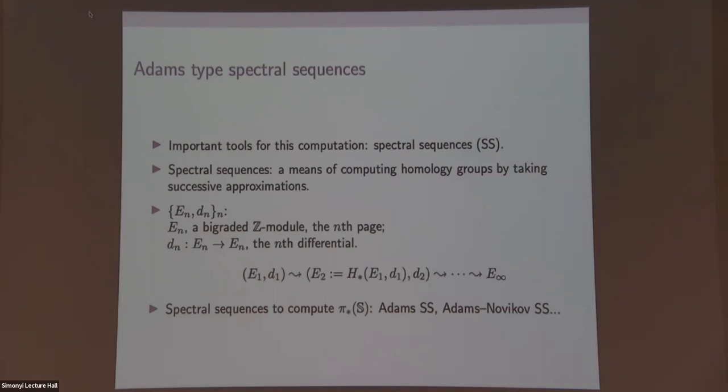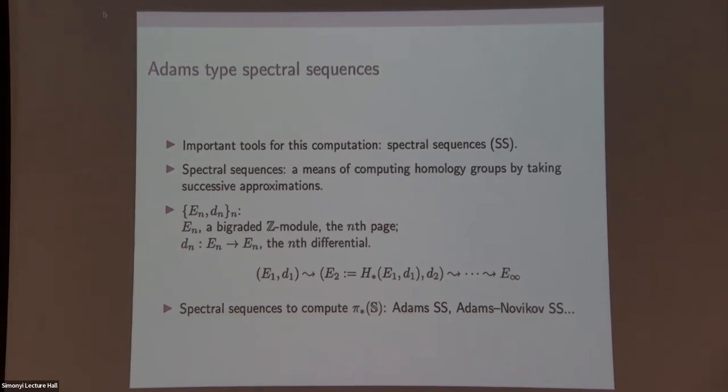How the computation of the spectral sequence works is the following: you start with E_1 and d_1. E_1 is the E_1 page, and d_1 is the d_1 differentials on the E_1 page. The E_2 page can be obtained by taking the homology from the previous page. Then you analyze the d_2 differentials on the E_2 page. E_2, d_2 allows you to go to the E_3 page by taking homology. Then you go to E_4, E_5, E_6, and you continue doing this until everything stabilizes and you get to the E_infinity page. In the spectral sequence calculation, the E_infinity page is usually close enough to what you want to compute. To compute the stable homotopy groups of the sphere, there are two very important spectral sequences. One is called the Adams spectral sequence, and the other is called the Adams-Novikov spectral sequence.